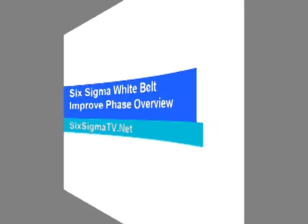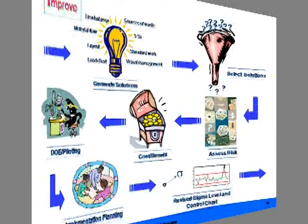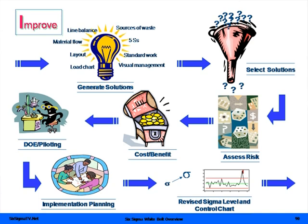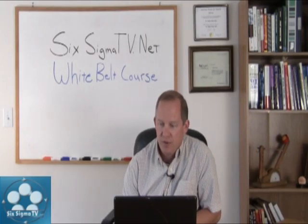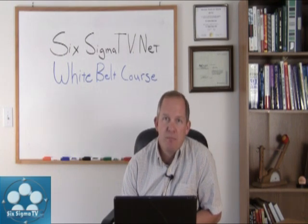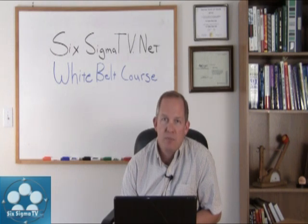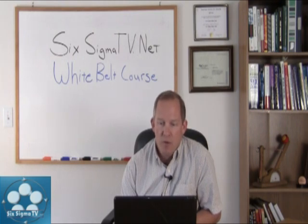Here's an overview of what this whole phase looks like and some of the tools we're going to use. First, all the root causes that Jeff generated, we're going to take those and start generating solutions using techniques like brainstorming and understanding where sources of waste are coming from. We're going to select solutions based on the best benefit for cost, try them out using design of experiments, then implement and check how our process is doing.